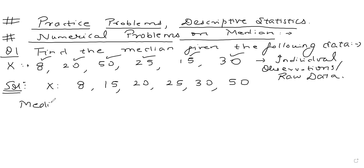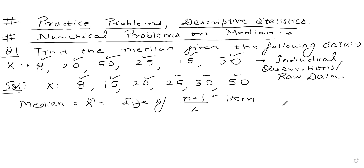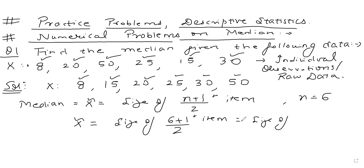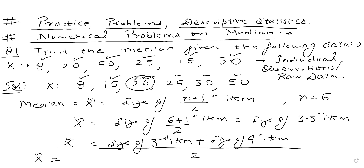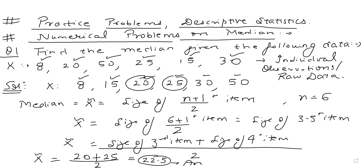What is my median? Median, X̃, is the size of the (N+1)/2-th item. N is 6 — there are 6 observations. So X̃ is the size of the (6+1)/2-th item, which is the 3.5th item. The 3.5th item is the size of the third item plus the fourth item divided by 2. The third item is 20 and the fourth item is 25. We get 45/2, which is 22.5. This is the answer for the median.